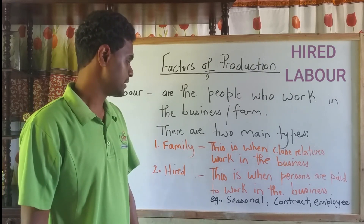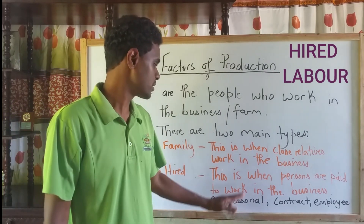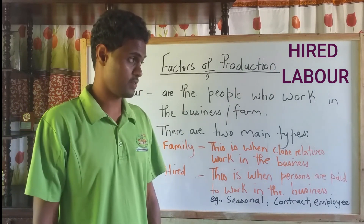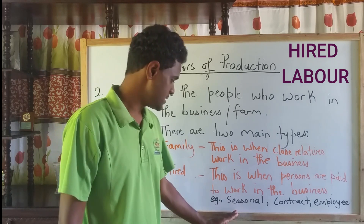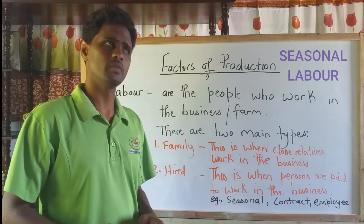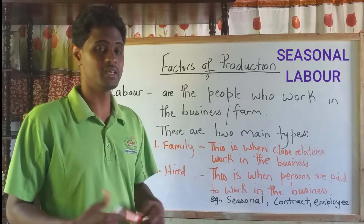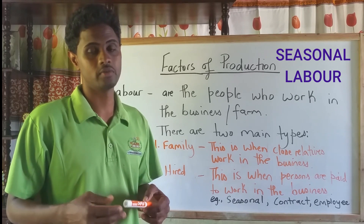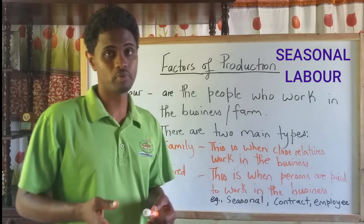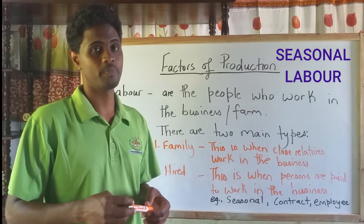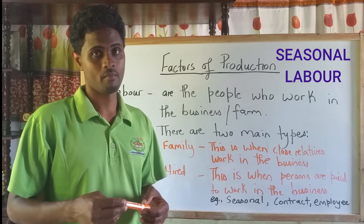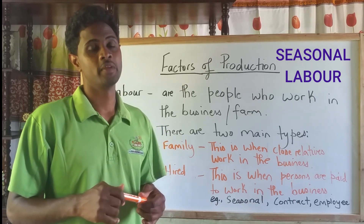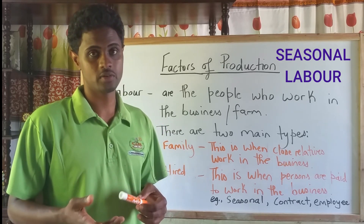Hired labor is when persons are paid to work in the business or on the farm. There are three main types. One, seasonal: the seasonal worker is contracted to work based on time — for example, when a crop is in season. Say the honey reaping season is in March and April; the producer may employ persons to harvest the honey. When the honey is completely harvested, they will be out of a job until the next season.